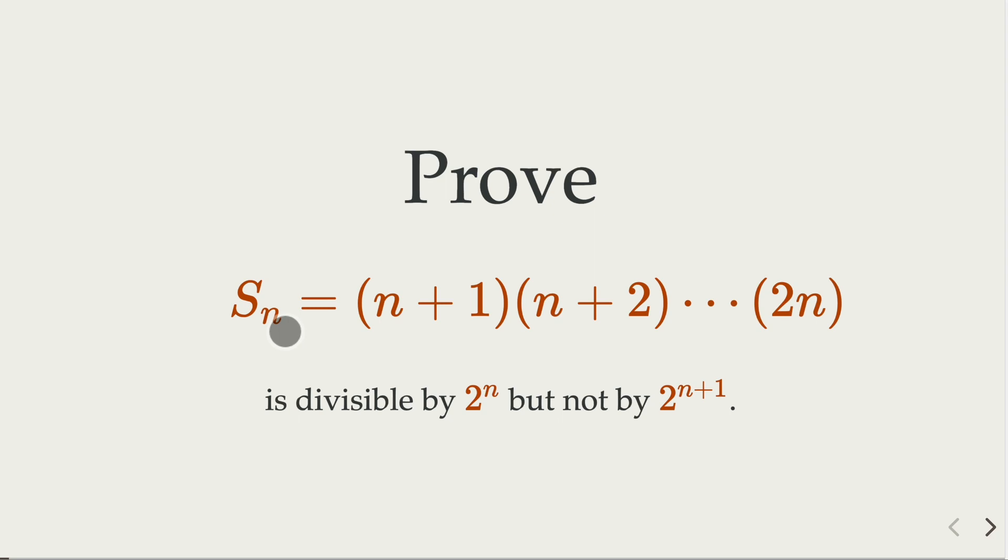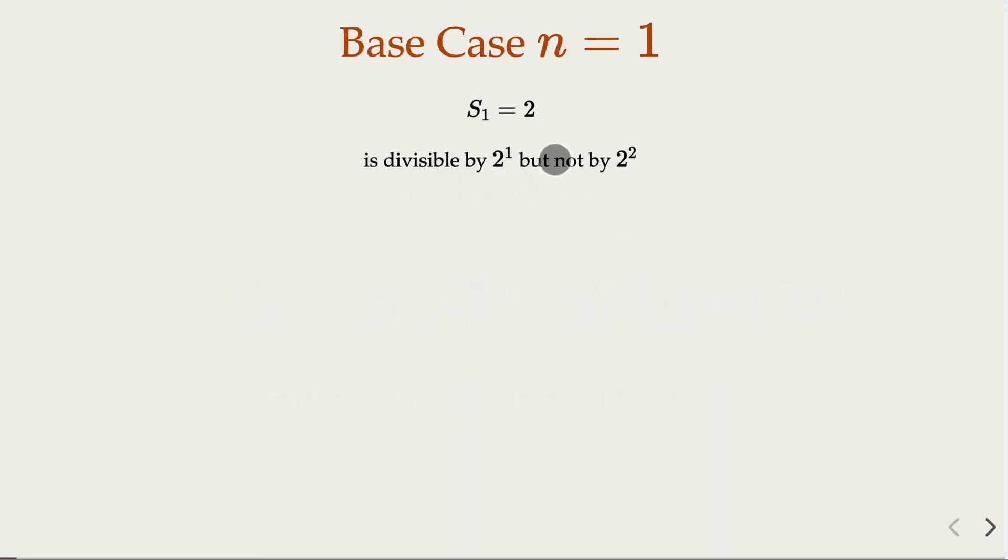So for the base case, n equals 1. That's going to be 1 times 2. The product is 2. Of course, that is indeed divisible by 2 to the 1st power, but not by 4 to the second power. The base condition holds.